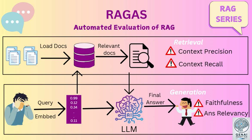Before we get into RGAS, can you quickly explain what retrieval augmented generation is and why it matters? Absolutely. Retrieval augmented generation, or RAG, lets AI models access external databases or documents to pull in relevant information. Imagine you ask an AI about a recent scientific breakthrough — instead of just relying on its limited training data, a RAG system can search scientific journals and pull up the latest research papers to give you a more comprehensive answer.